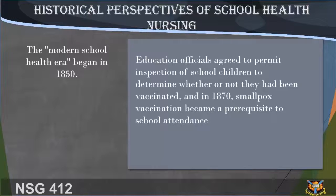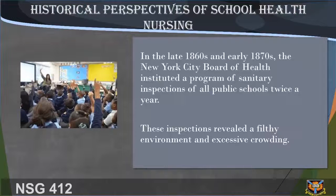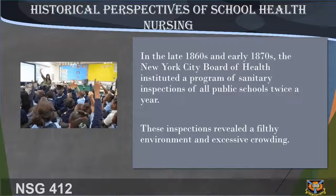In 1870, smallpox vaccination became a prerequisite to school attendance. In the late 1860s and early 1870s, the New York City Board of Health instituted a program of sanitary inspections of all public schools twice a year. These inspections revealed a filthy environment, excessive crowding, and non-existent modern plumbing. Schools were sometimes overrun by rats.